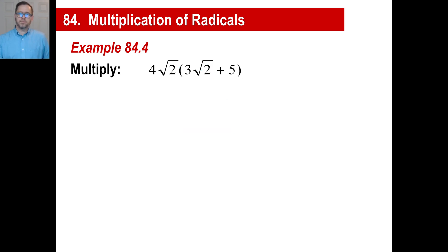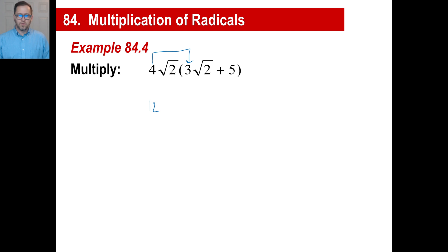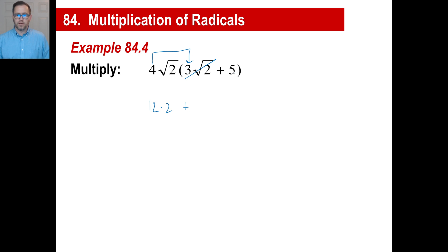Here's one last example — pause and give it a shot. 4 times 3 is 12, and √2 times √2 is just 2 (since √4 = 2), giving 24. Then 4√2 times 5: there's no radical at the end, so you just multiply 4 times 5 and keep √2, giving 20√2. The final answer is 24 + 20√2.